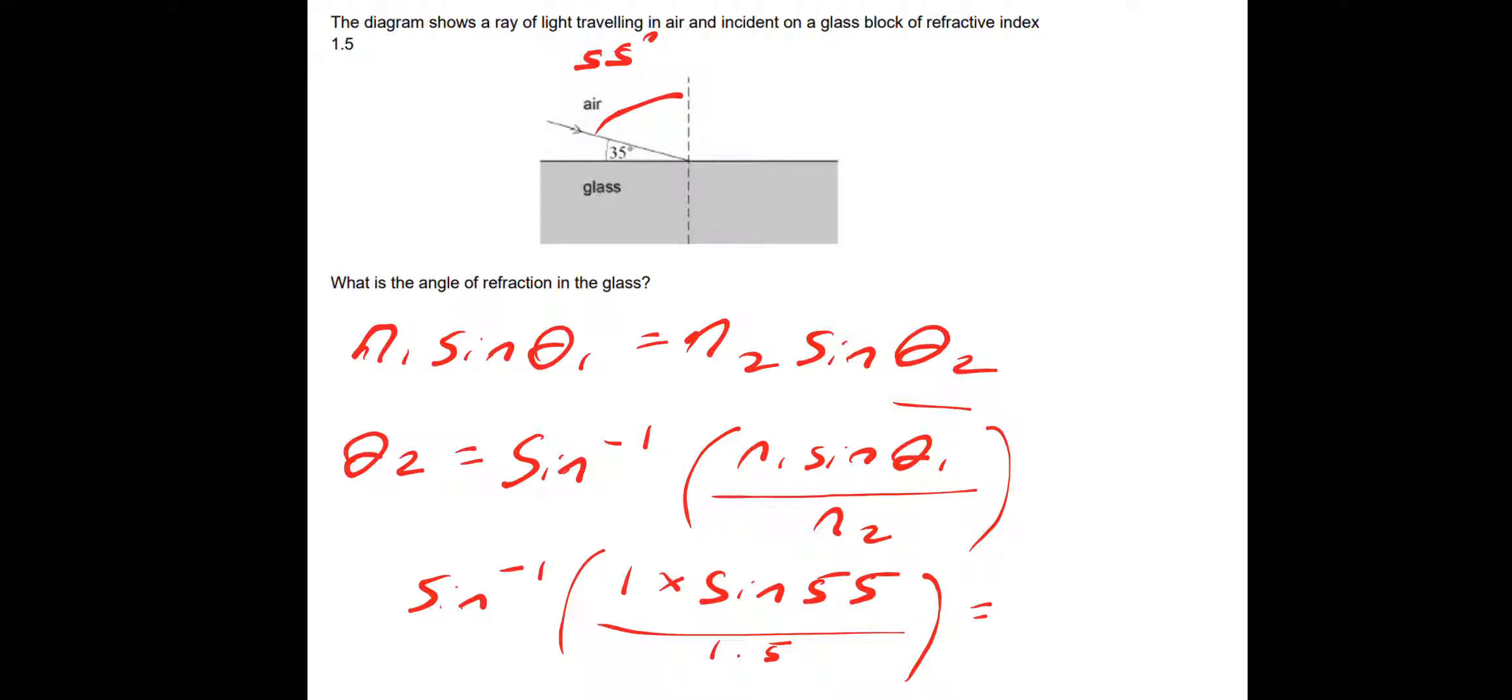And if you calculate that, you should get 33 degrees, which makes sense. We've gone from a less optically dense material to a more optically dense material, so the angle of refraction should get smaller compared to the angle of incidence. And 33 is smaller than 55, so we're okay.